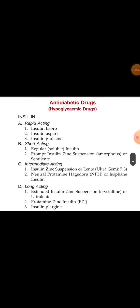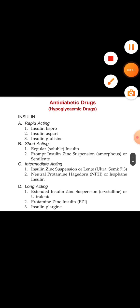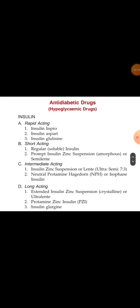Insulin types: first is rapid acting — examples are insulin lispro, insulin aspart, insulin glulisine. Second is short acting — examples are regular (soluble) insulin and prompt insulin zinc suspension (amorphous), also called semi-lente. Third is intermediate acting — insulin zinc suspension (lente), and neutral protamine Hagedorn (NPH) or isophane insulin. Fourth is long acting — extended insulin zinc suspension (crystalline or ultra-lente).